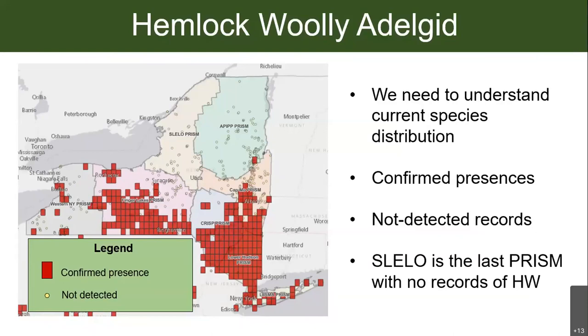People surveyed hemlock trees and did not find hemlock woolly adelgid — so that's really important. In SLILO we have some of those not-detected points, so we know the adelgid has not been found in those areas. If it was just blank and no one had surveyed there, we wouldn't really know if it indeed was not there or if we just haven't noticed it yet. These not-detected records are hugely important.